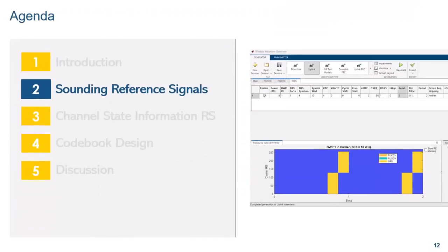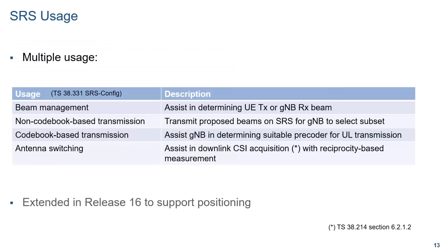Now let's have a look at the sounding reference signals. Sounding reference signals are provided for different use cases, including beam management — for example, to assist the base station in determining a suitable receive beam. For that purpose, the same SRS can be sent multiple times with identical beamforming to let the gNB try out different receive beams and pick the best one. SRS can also be used for the UE to propose a precoder for the uplink prior to applying it to the data channel. The base station can then allow or disallow particular precoding vectors in the proposed beamforming matrix.